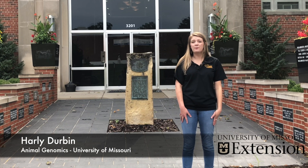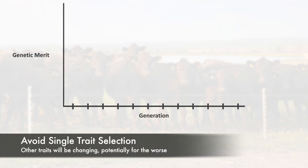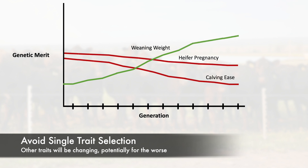When looking at EPD values for a bull, seeing all those numbers at once can be a little overwhelming. Where do you start? It might seem best to focus on a single EPD and work towards cattle that are exceptional for one trait. But while you can make rapid progress in that one trait, it's not a good idea. Other traits will be changing too, and they could be changing for the worse if you're not paying attention.